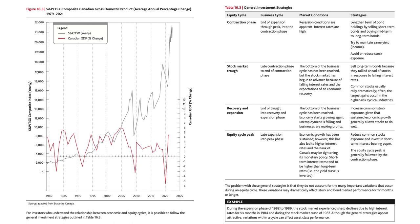The stock market trough corresponds to the late contraction phase to end of contraction phase of the business cycle. The bottom of the business cycle has not been reached, but the stock market has begun to advance because of falling interest rates and expectations of an economic recovery. The strategy here: sell long-term bonds because they rallied ahead of stocks in response to falling interest rates. Common stocks usually rally dramatically, and often the largest gains occur in the higher-risk cyclical industries.